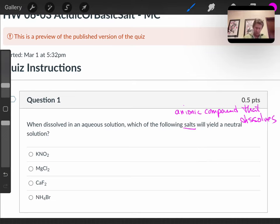We can break them up into ions. MgCl2 gives us magnesium and two chloride ions. CaF2 gives us calcium 2+ and fluoride ions. NH4Br gives us ammonium and bromide.